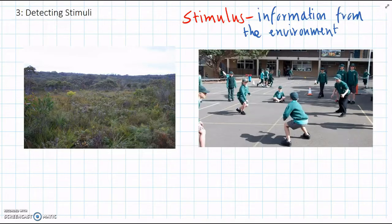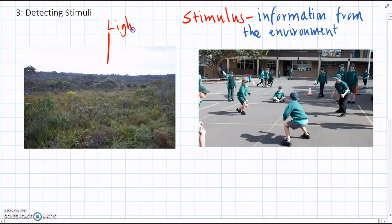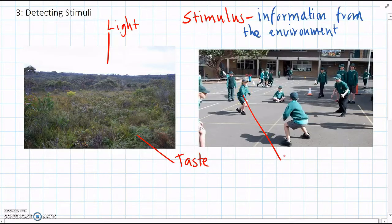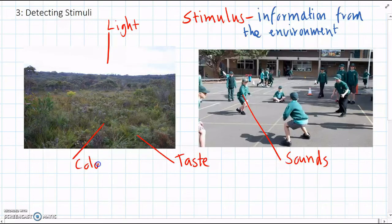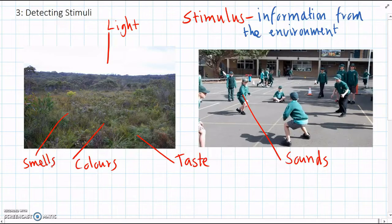So a stimulus can be anything like light, or if we're eating, or if an animal is eating plants, it could be taste. If we're talking to other people, it's different sounds, or if animals are listening for predators, it's different colours and smells as well. These are just some different types of stimuli, or bits of information that a living thing can sense from its environment.